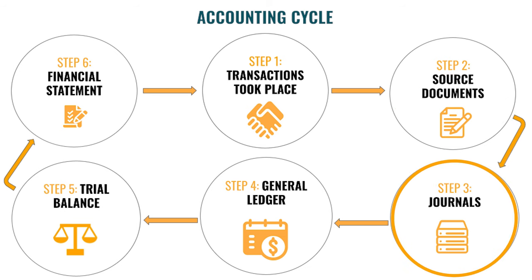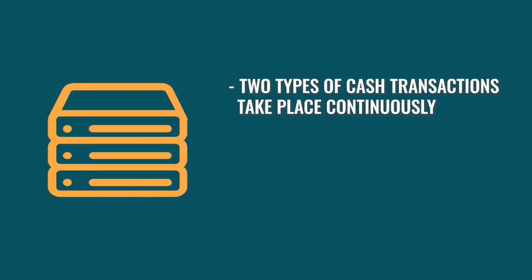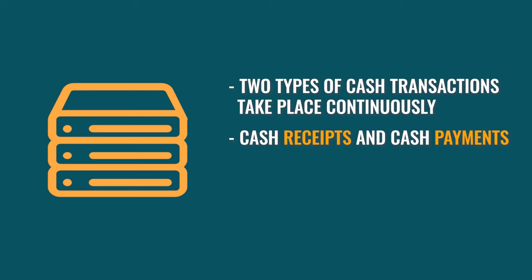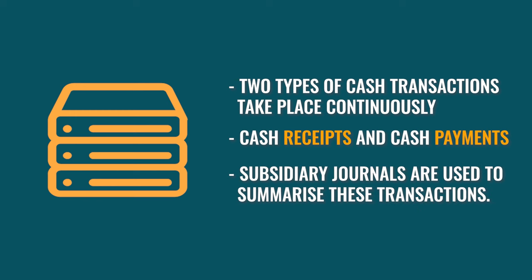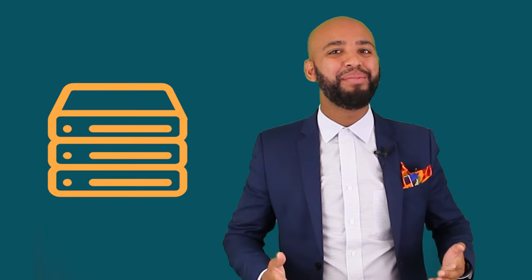Step 3 of the accounting cycle is where all the documents are recorded in the cash journals. In a service business, there are two types of cash transactions that take place continuously: the cash receipt and the cash payment. The cash transactions are recorded in journals, also called subsidiary journals, that are used to summarize the transactions. It organizes transactions into different types to simplify the orderly transfer of information into the next step of the accounting cycle, namely the ledger.